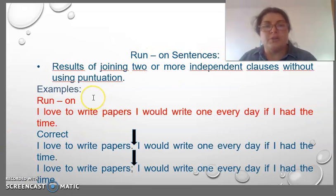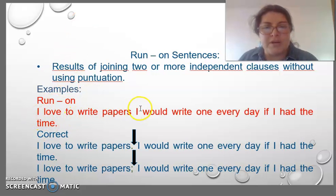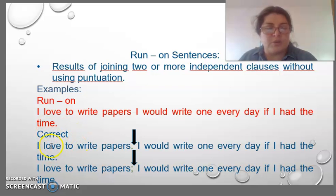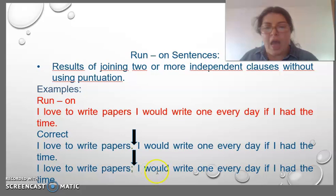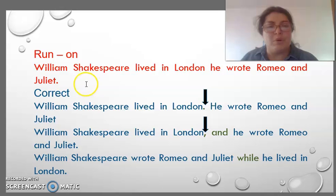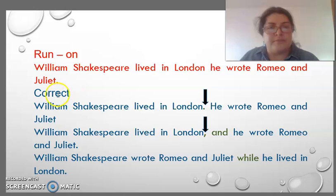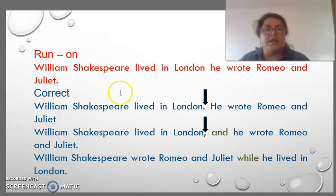Run-on sentences result from joining two or more independent clauses without any punctuation. For example: 'I love the white papers. I will write one every day if I have the time.' It doesn't use any punctuation. The correct form is using punctuation: 'I love the white papers' — semicolon — 'I would write one every day if I have the time.' Another example: 'William Shakespeare lived in London. He wrote Romeo and Juliet.' The correct form is using punctuation: 'William Shakespeare lived in London' — period — 'He wrote Romeo and Juliet.'